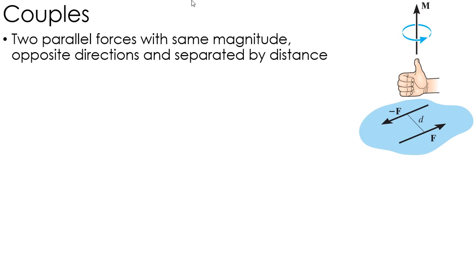Okay, the next topic we're going to talk about are couples. The definition of a couple is two parallel forces with the same magnitude in opposite directions but separated by a distance. For example, what I have over here, I have one force in this direction, a negative force, same magnitude, opposite direction, separated by a distance d.